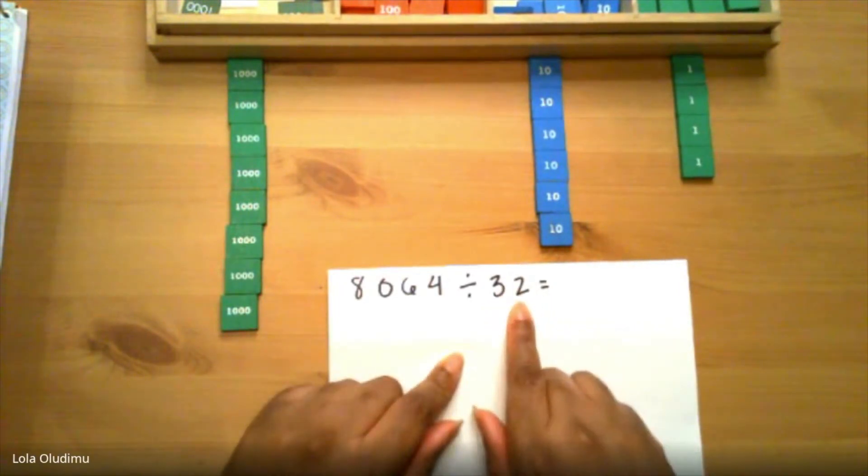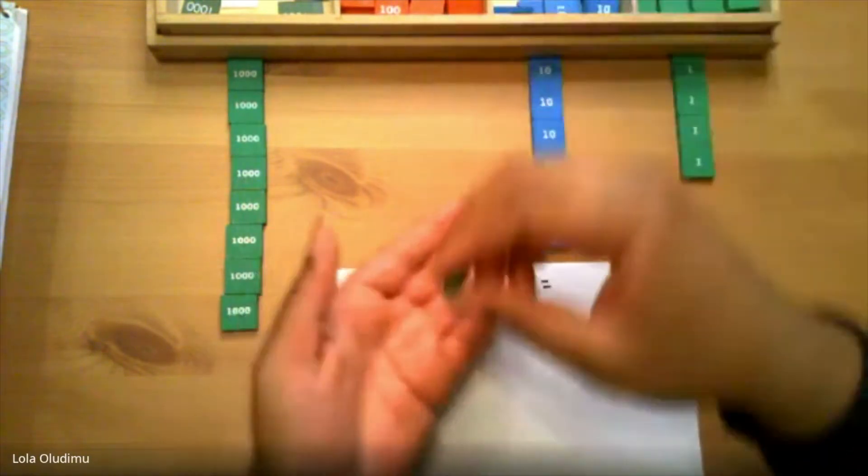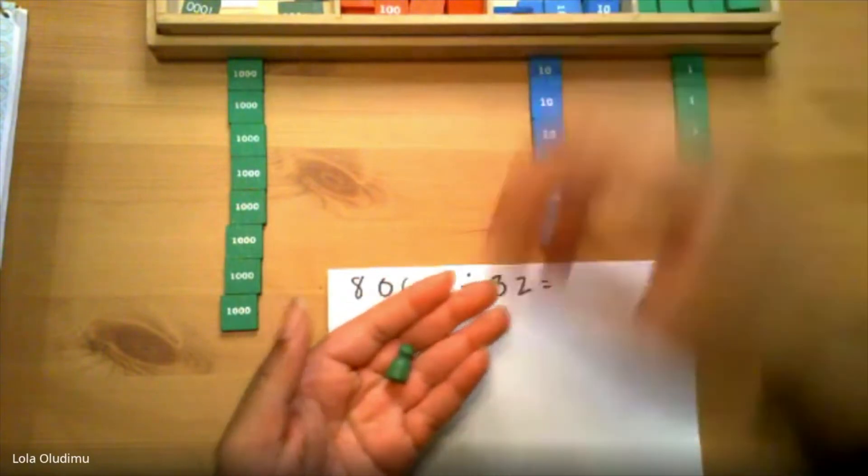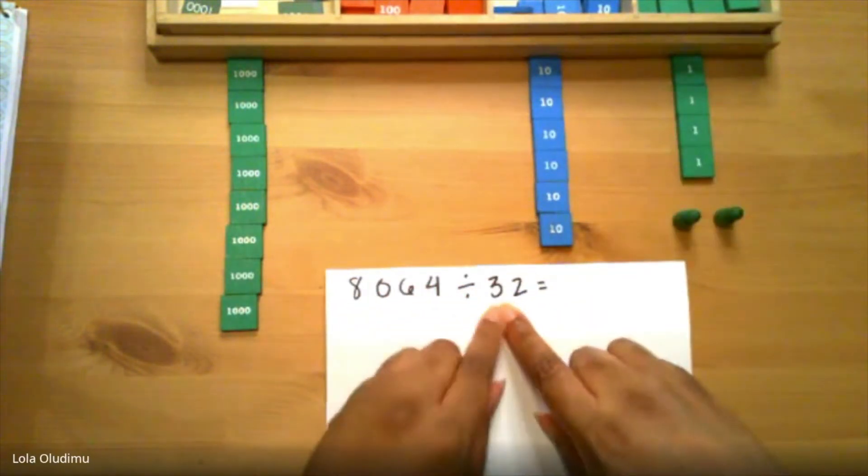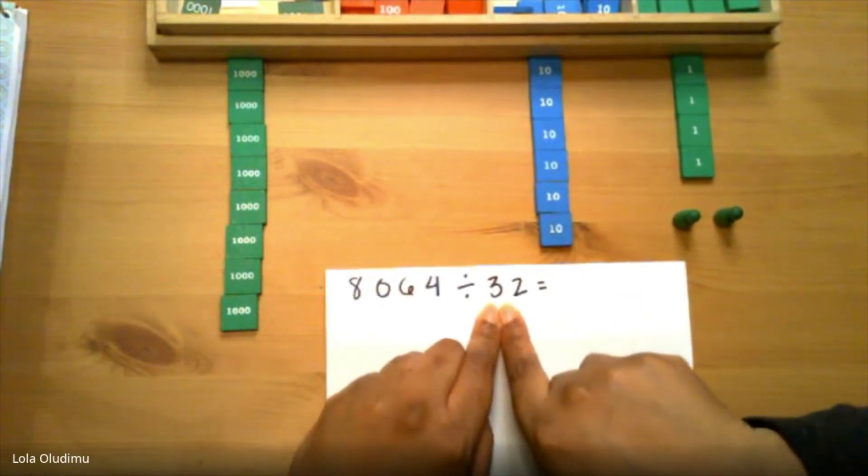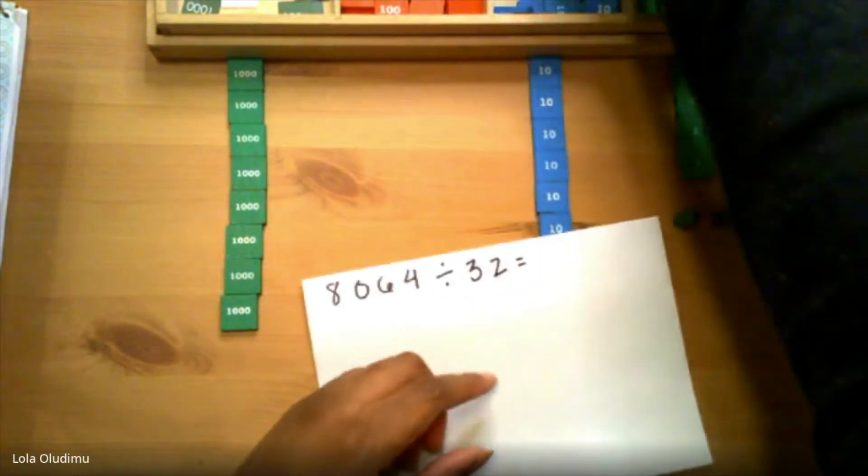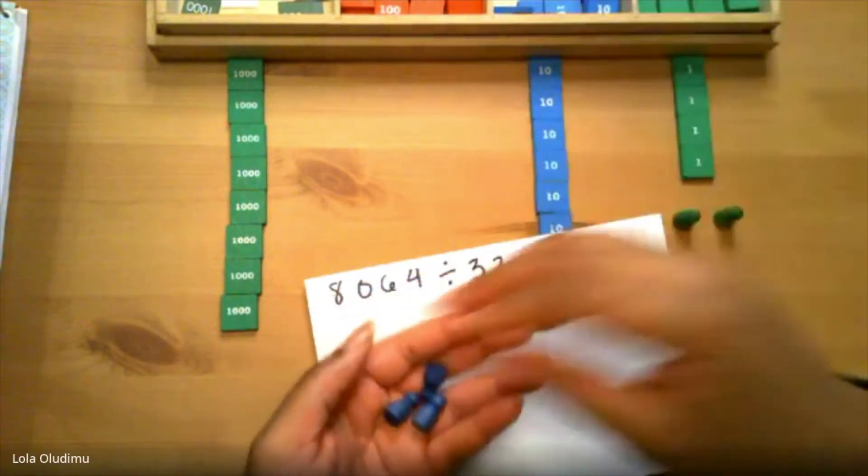We need to get two green skittles to represent the two units. One, two. Now we need to get three blue skittles that will represent our tens. We need three blue skittles. One, two, three.